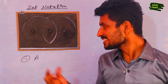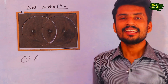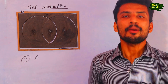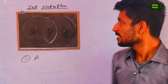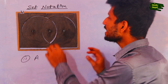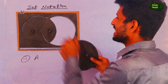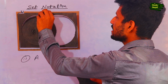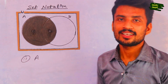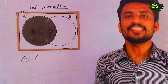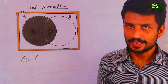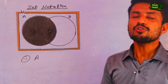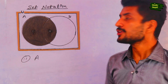The second topic is A. I am going to show you the portion of A in this Venn diagram. For A, you have to remove everything except A. So this is A in the Venn diagram — to show A, you have to remove everything except A.